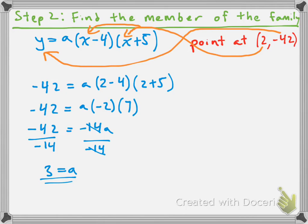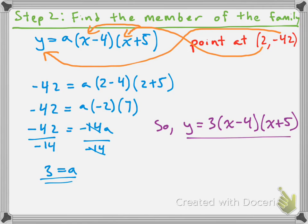Now we know that the 'a' value of our quadratic function is 3. That tells us the parabola opens up because it's positive 3, and we can tell it's going to be relatively skinny compared to a regular parabola. So all we need to do now is sub 'a' back into the family equation. We get y equals 3 times x minus 4 times x plus 5. And that is the equation of our quadratic function. Take care, guys.